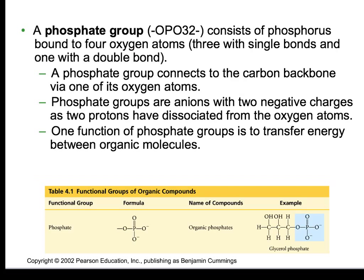The phosphate group — we would normally draw that as PO4 with a minus 2 charge. It's got phosphorus, very polar with all these negative oxygens around it. When we get into metabolism, we're going to see that these phosphate groups, being very negative, give us the molecules that cells use for energy — such as ATP would be another example of a phosphate group at play in biological systems.